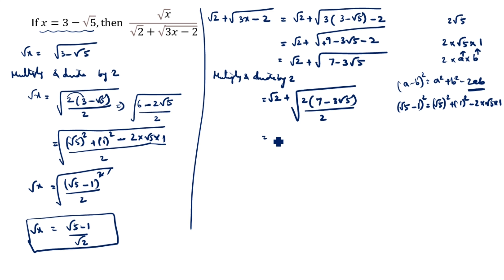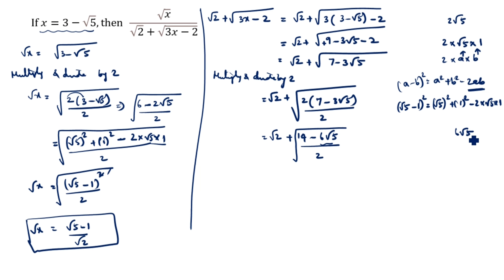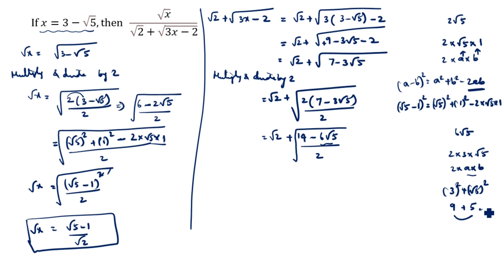Now we multiply and divide by 2 inside: √2 plus √((14 minus 6√5) divided by 2). We need to split 6√5 as 2·3·√5, which is the form 2·A·B. Here A is 3, B is √5. Check: A² = 9, B² = 5, and 9 plus 5 equals 14. So 14 and 6√5 match the (a minus b)² pattern.